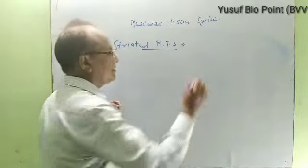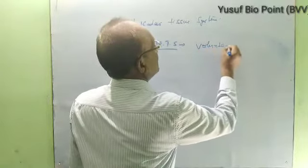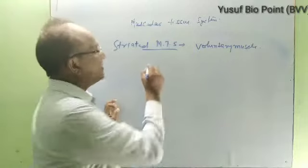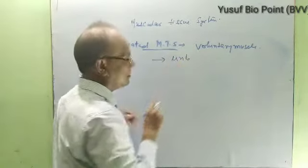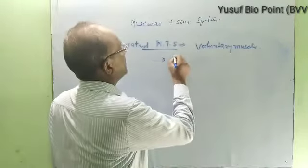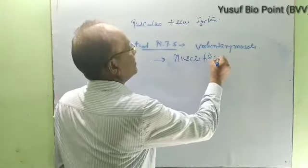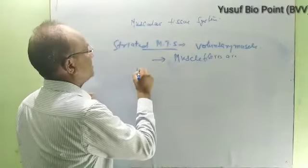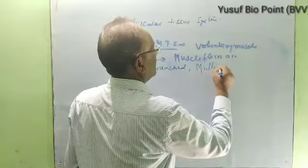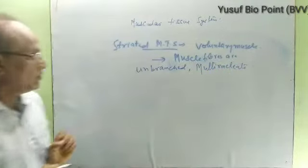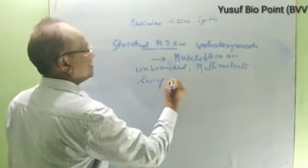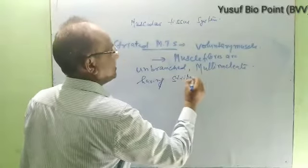Striated muscular tissue is voluntary — we can move these muscles according to our wish. The fibers are unbranched and multinucleate, meaning having many nuclei. The fibers have stripes in the form of bands.